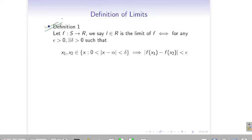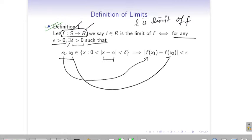The first definition says: if you have a function f such that s to r, where s is the domain and r is the co-domain, and we have some l belongs to r, we call l the limit of f if and only if for any ε > 0, there exists δ > 0 such that if you take any two points x₁ and x₂ where 0 < |x - α| < δ, then |f(x₁) - f(x₂)| < ε. Then we say that l is the limit.